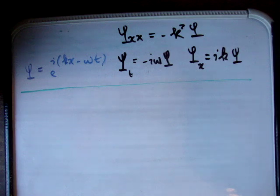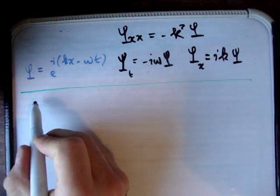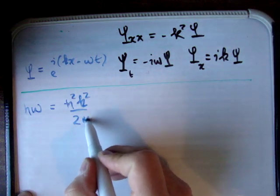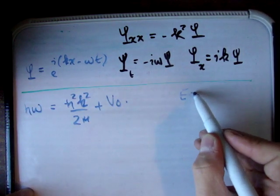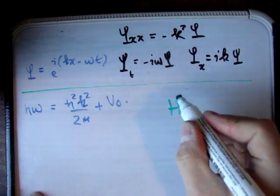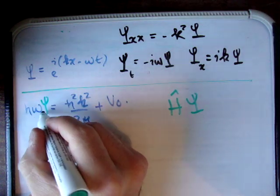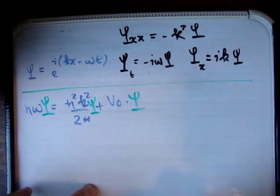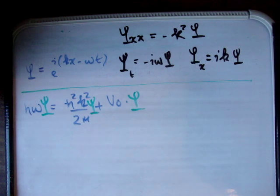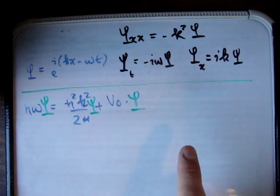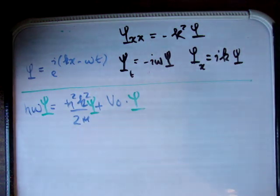Let's see what our Hamiltonian looks like operating on the wave function. My Hamiltonian says h-bar ω equals h-bar squared k squared over 2m plus V0. By the way, E equals h-bar ω — that shouldn't be new to you. Now for reasons which to be honest I don't fully understand — this was just Schrödinger's insight — he wanted to turn this into a differential equation, using the derivatives of the wave function in the Hamiltonian equation.